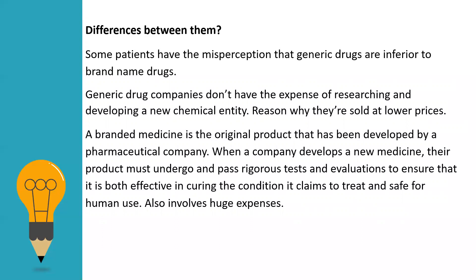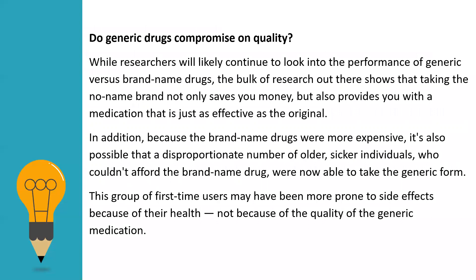Some people have the misconception that generic drugs are inferior to brand name drugs. Generic companies don't have the expense of research and development of a new chemical entity, which is why they can sell at lower prices — but they do not compromise on quality. A branded medicine is the original product developed by a pharmaceutical company. Their product must undergo and pass rigorous tests and evaluations to ensure it is both effective in treating the claimed condition and safe for human use. This involves huge expenses, many failed trials, and a patent process.